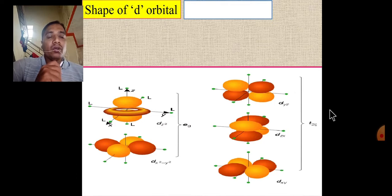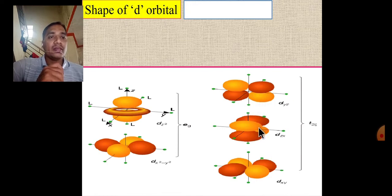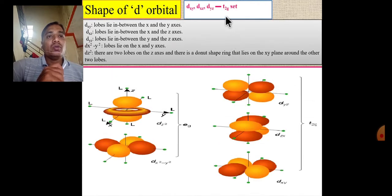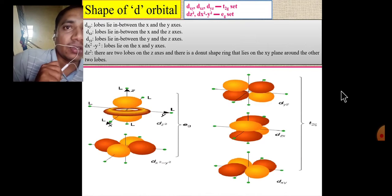This slide shows the shapes of the d orbitals. The total 5 d orbitals contain two sets: the first set includes dxy, dxz, and dyz; the second set includes dx²−y² and dz². The first set is called t2g orbitals, whose lobes lie between the axes. The second set, called eg orbitals, has lobes lying along the axes.